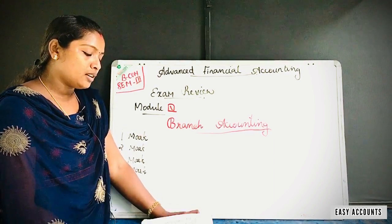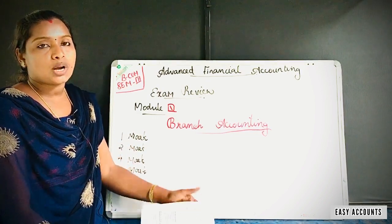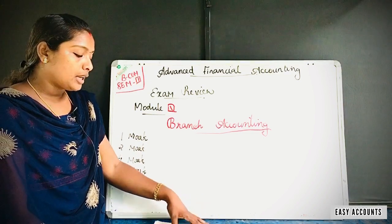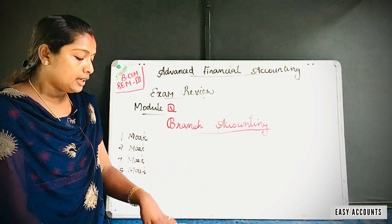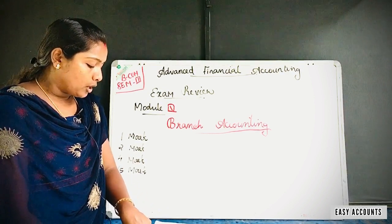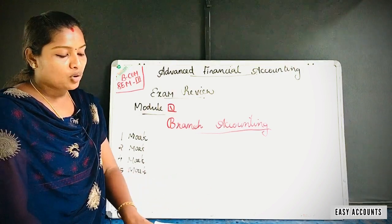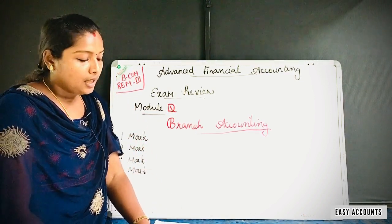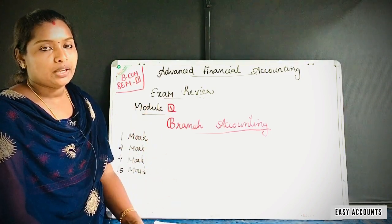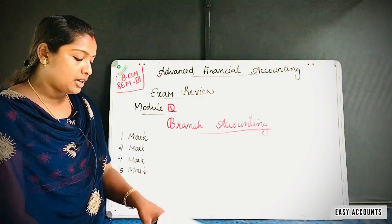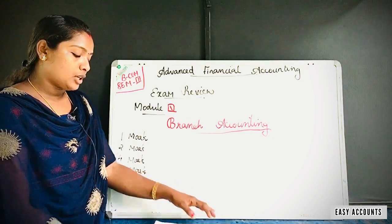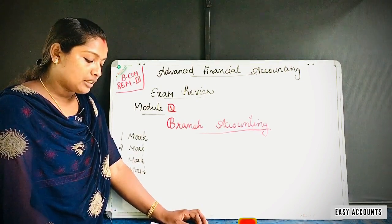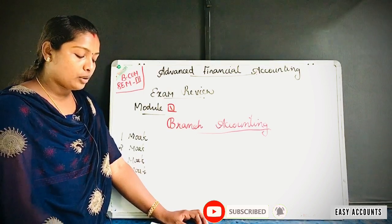You can be taught the debtors method, stock and debtor system, and other important things. If you want to use an account, you can use a branch adjustment account. If you have a profit, you will need to prepare a branch adjustment account. You will also need to prepare for shortage, pilferage and theft, and loss by fire accident.